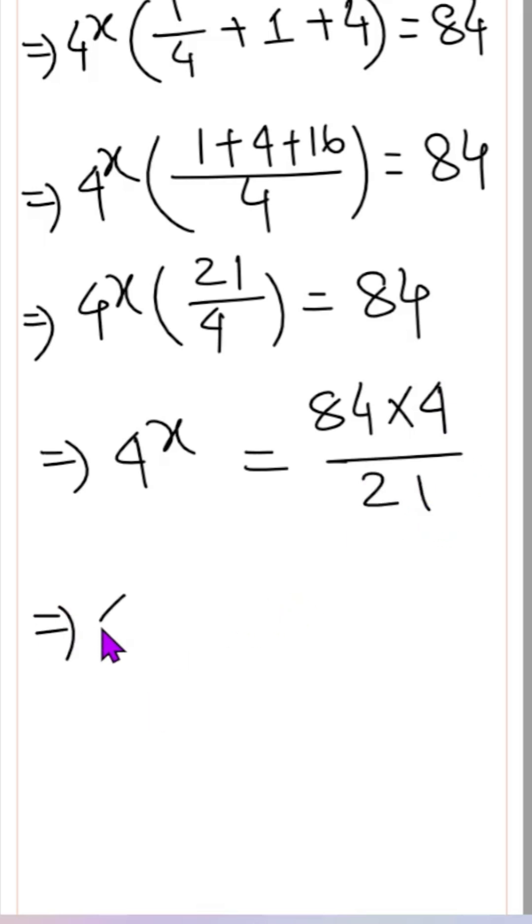So 4 to the power x equals 84 by 21, which is 4. So here is 16, or we can write 4 square. So with similar base, we can write x equals 2. This is our answer. Thank you.